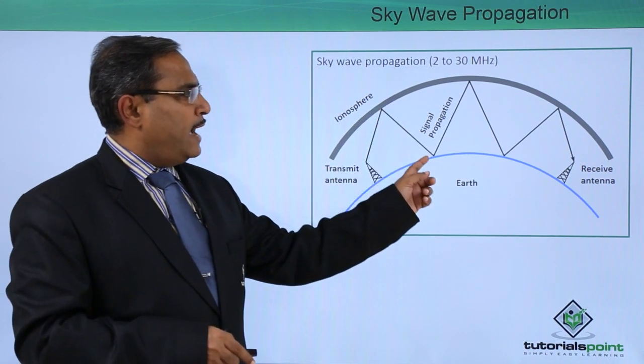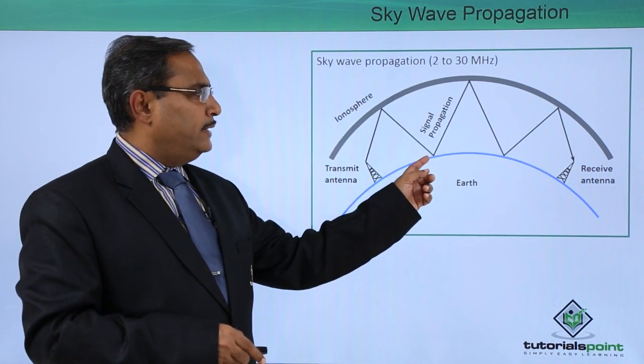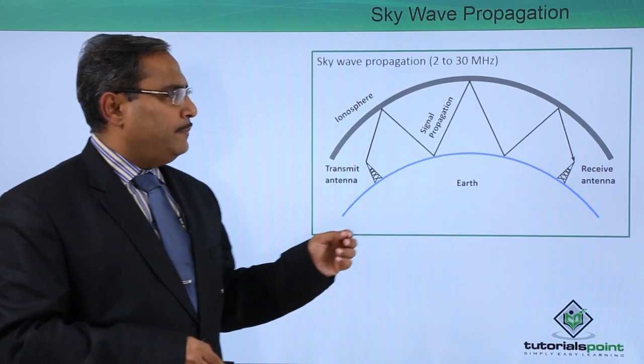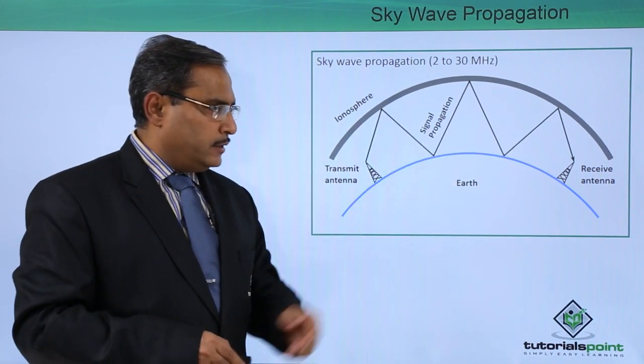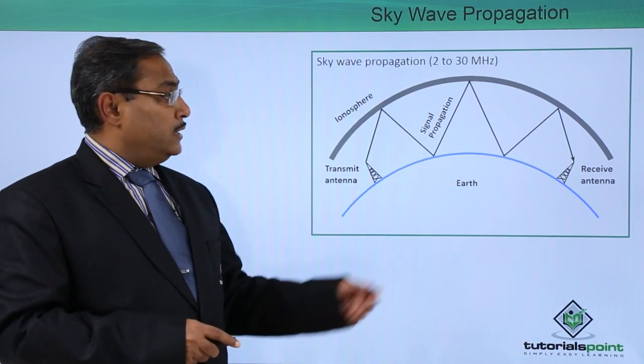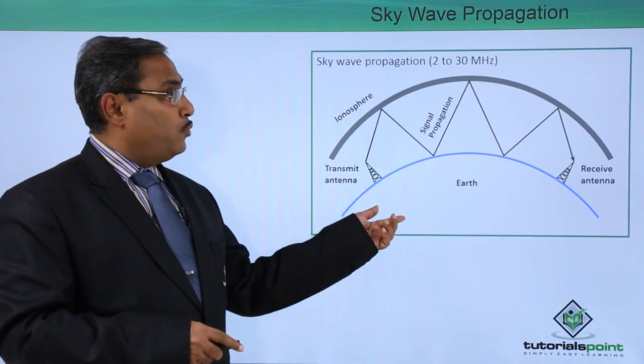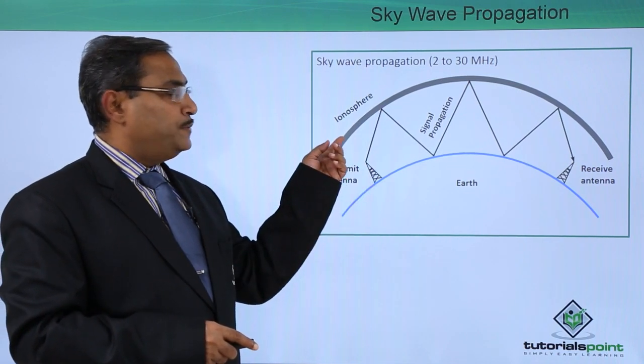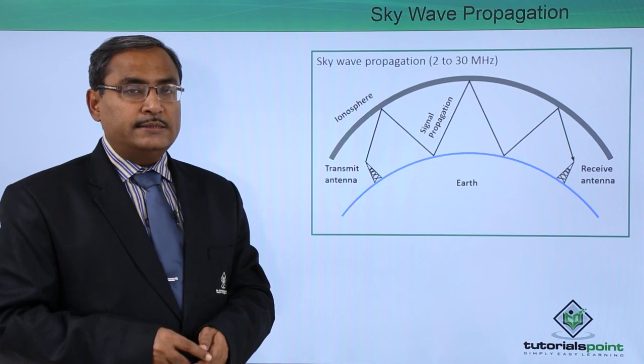From there it will be reflected back, then from the ground again the signal propagation will take place. After having couple number of time reflections, ultimately the receive antenna will be getting the respective signal. This is our sky wave propagation and you can find that here this ionosphere is also behaving as a reflector.